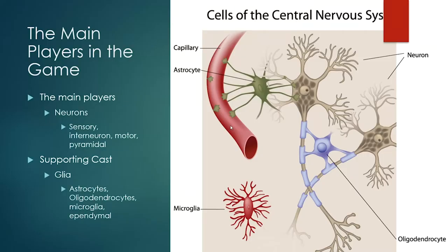We're going to start in the microscopic world with the main players. The nervous system is made of neurons — there are lots of different kinds with different shapes that allow for different types of information processing and signaling. Embedded in all of this is something important to keep in context: when you think about the brain, you might picture a big gelatinous collection of neurons, but there are actually just as many glial cells as neurons. Glia is not a specific type of cell — it is a category of cells.